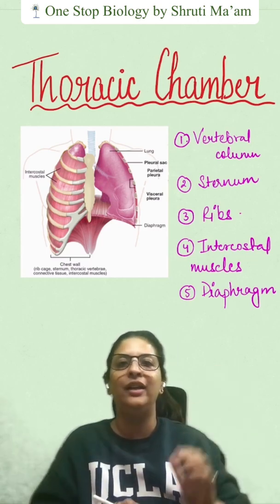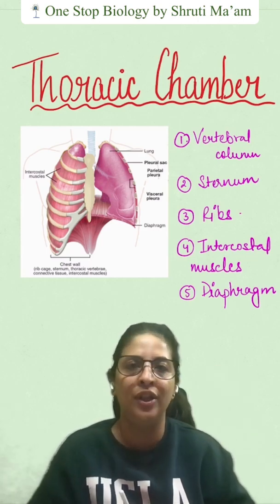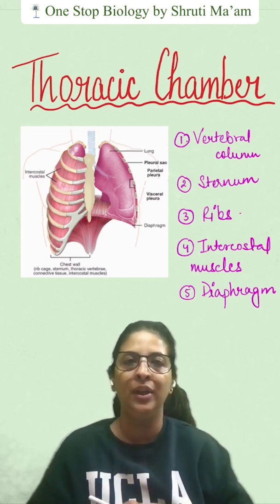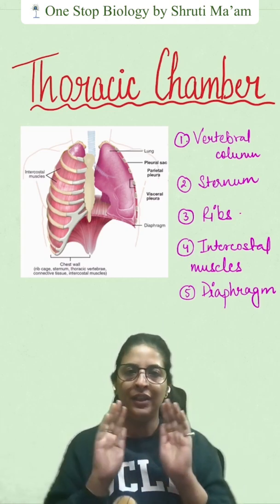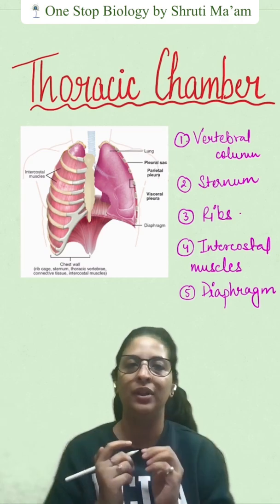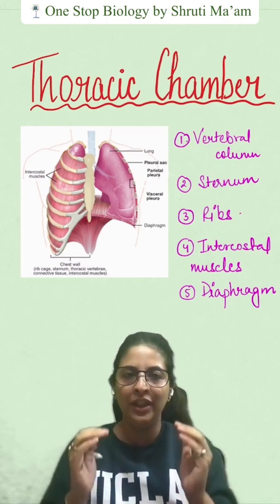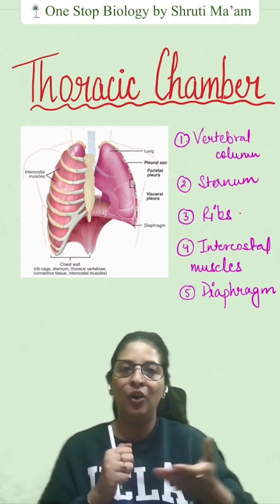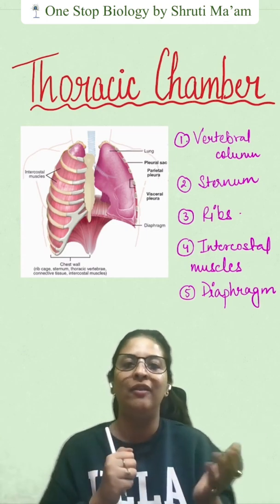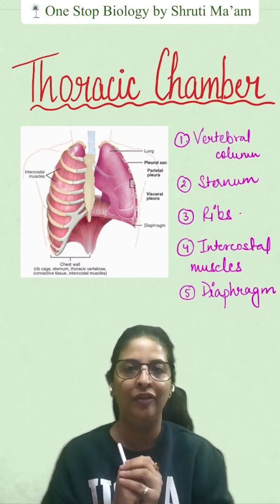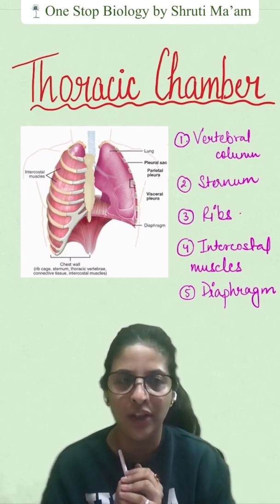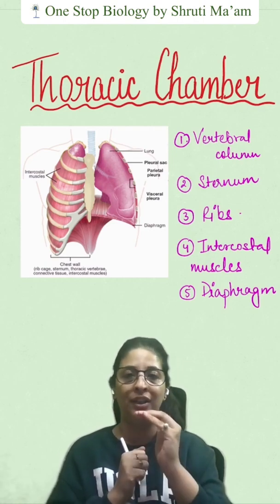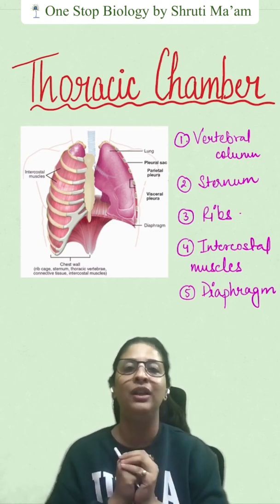From the back we have the vertebral column, from the front we have the bone of sternum, towards the lateral sides we have all the ribs and in between the ribs we have intercostal muscles. At the end of the thoracic cavity we have the diaphragm, which is a muscular and membranous partition between the thoracic and the abdominal cavity.